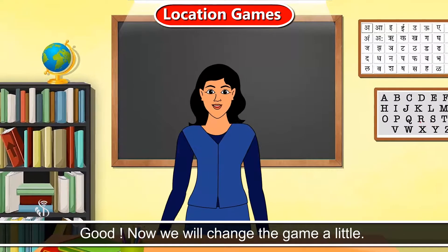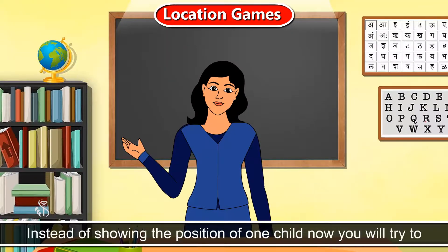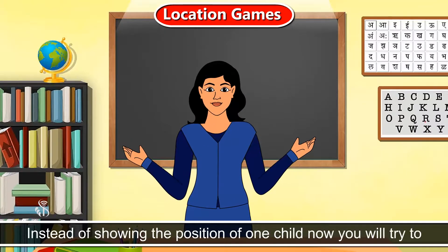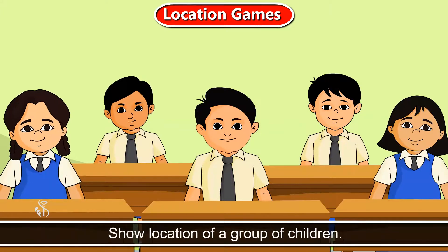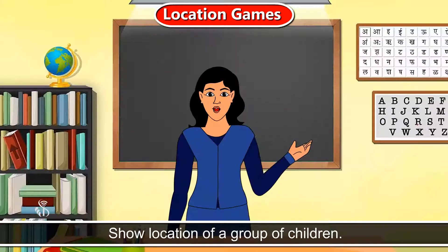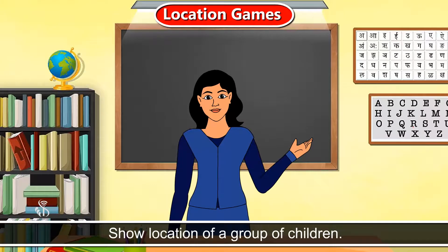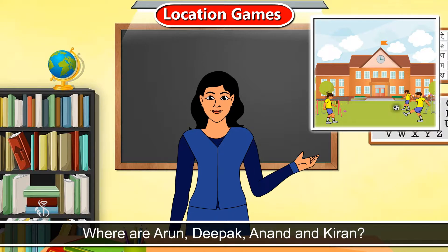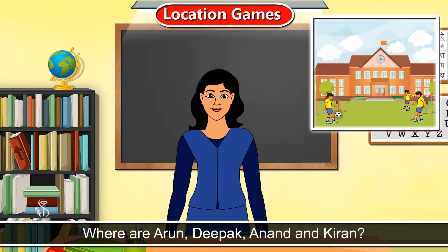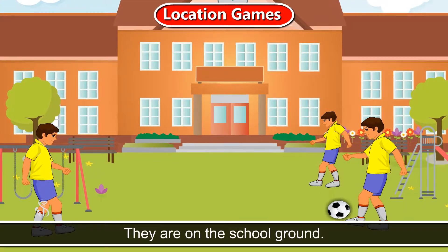Good. Now we will change the game a little. Instead of showing the position of one child, now you will try to show the location of a group of children. Where are Arun, Deepak, Anand and Kiran? They are on the school ground.